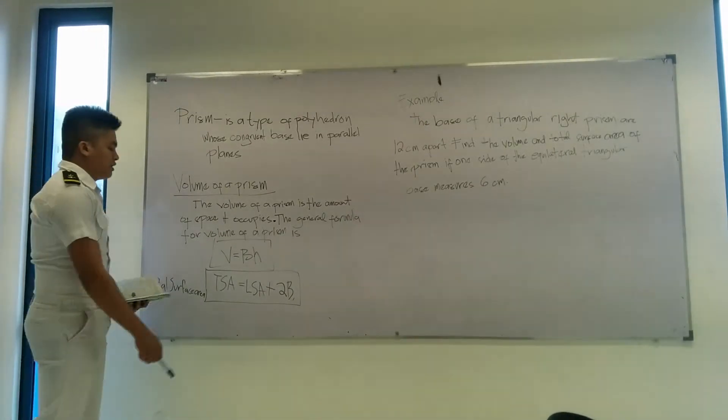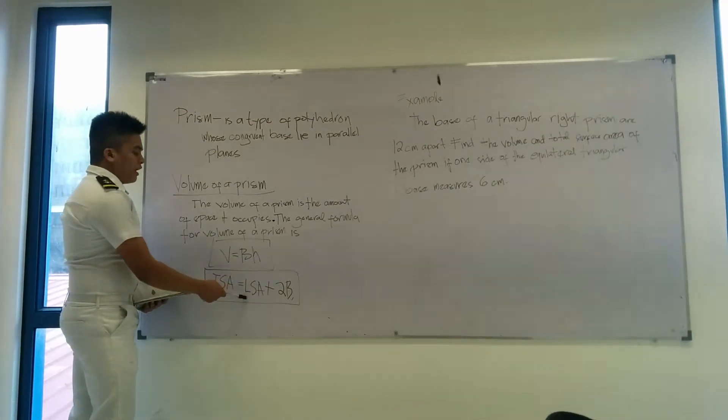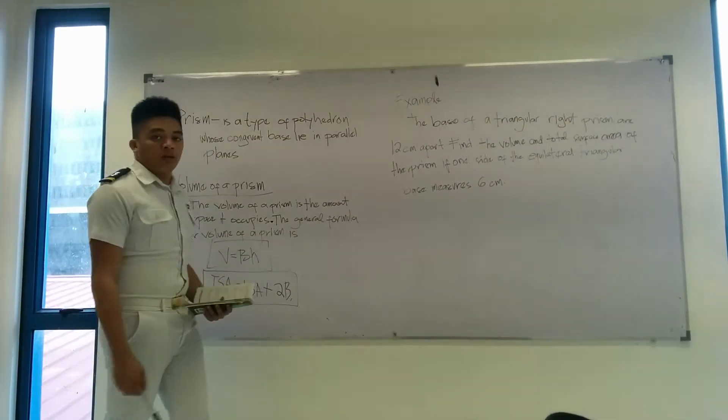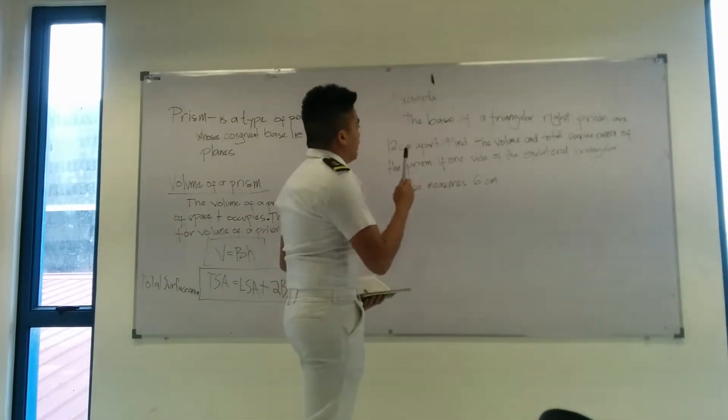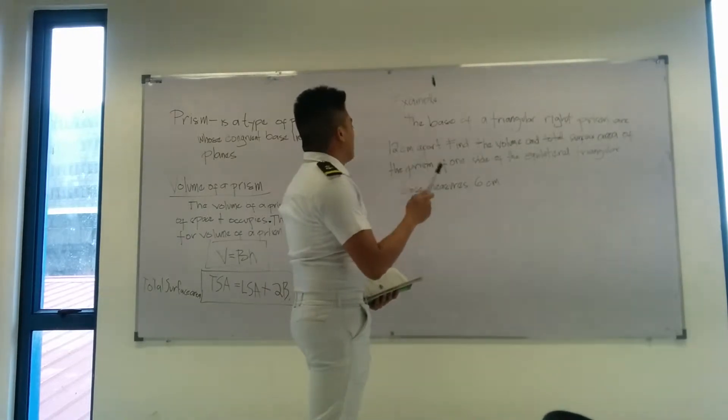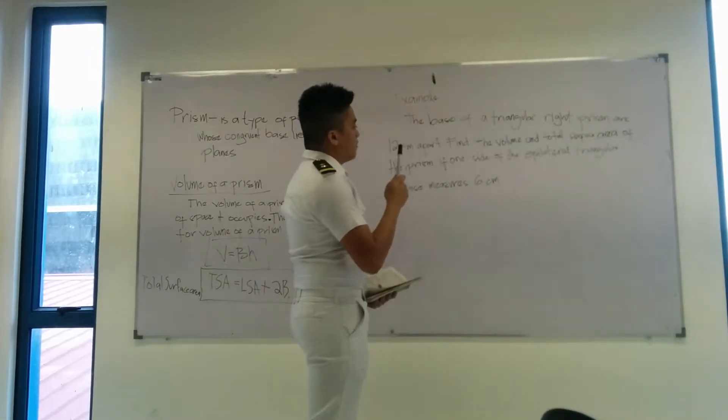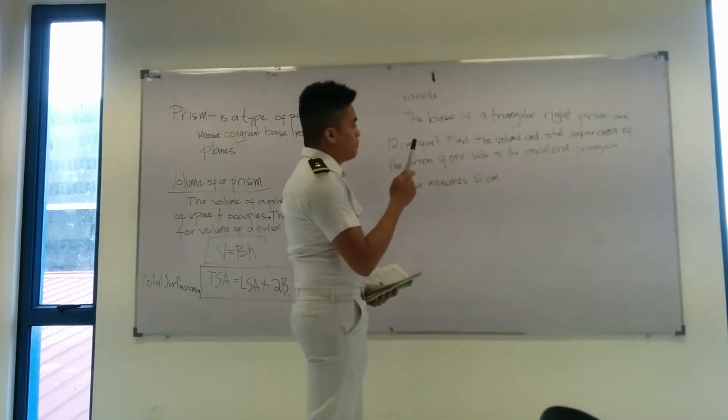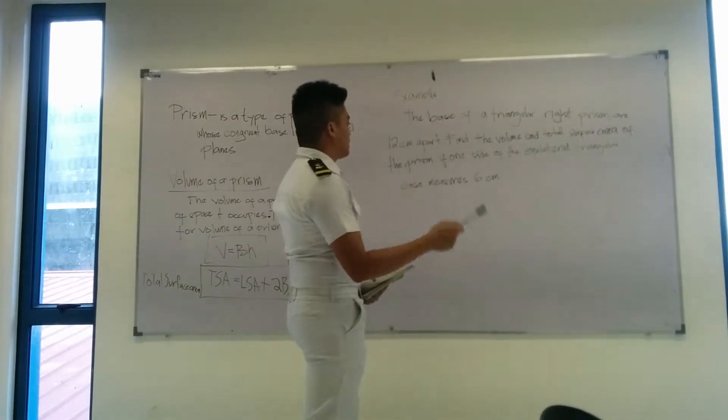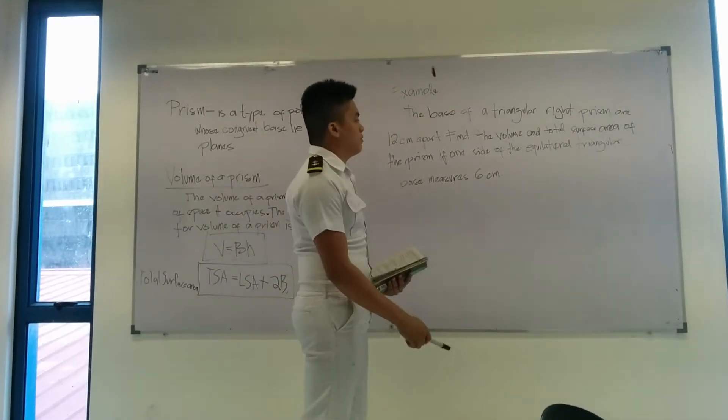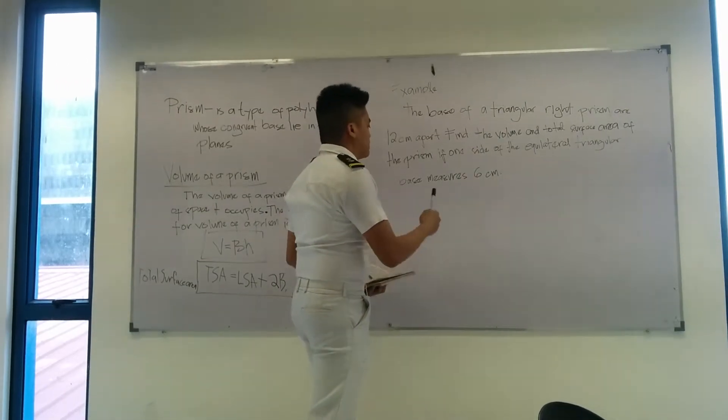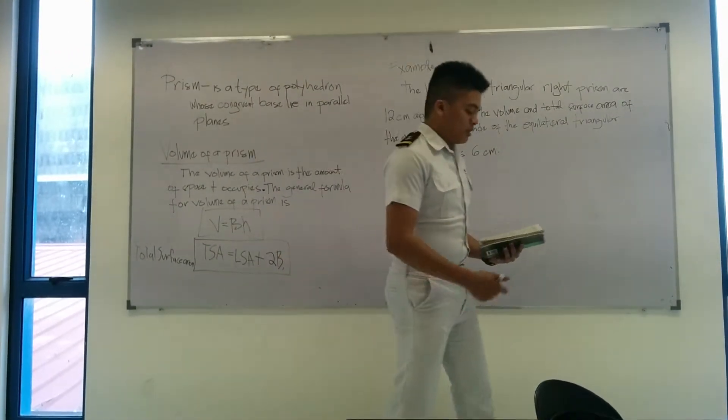To get the total surface area, TSA is equal to LSA plus 2B. This is the example of volume of prism. The prism of the triangle and right prism are 12 cm apart. Find the volume and total surface area of prism where one side of the triangular base measures 16.